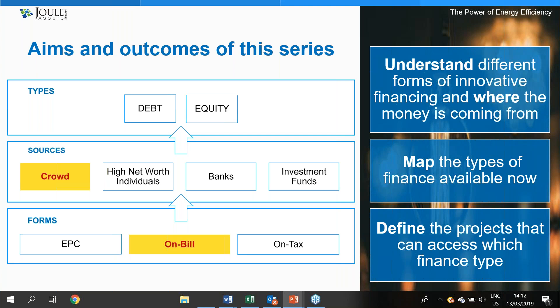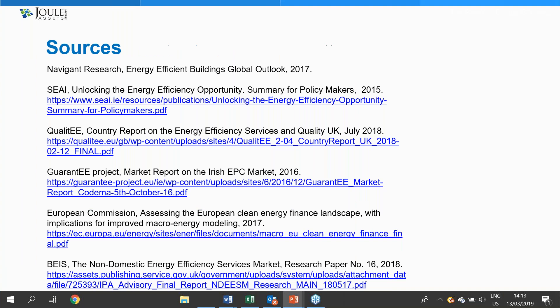The aims of this series are to present our knowledge and help the audience walk away with a better understanding of the various forms of financing, including on-bill, on-tax, and EPC. We'll look at where the money is actually coming from and what the implications may be, and look at the types of finance actually available for which projects. The last webinar on April 17th will focus on on versus off balance sheet finance, the cost of finance, and how deals might be structured.